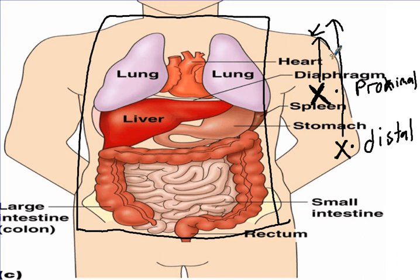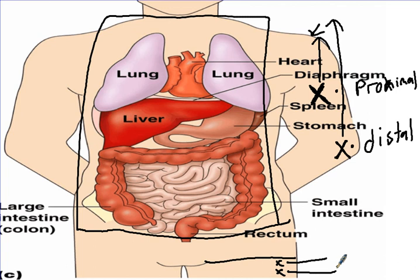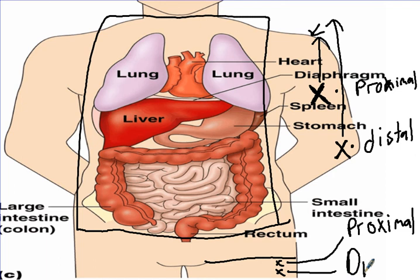Now let's do the leg. Here would be the attachment to the main body. Looking at the upper thigh and the lower thigh — which one is proximal and which one is distal? The upper thigh would be proximal because it's closer to the body, while the lower thigh would be distal because it's further away. And I'm going to hand the mic back to my colleague Zephryn Davis.